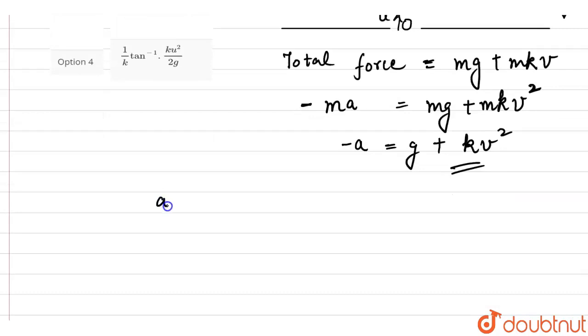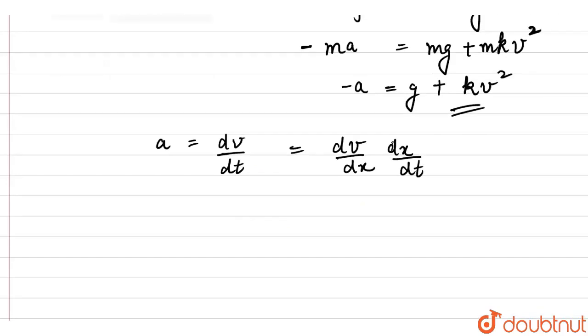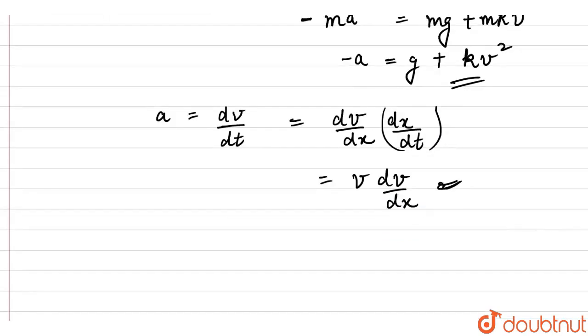We know that acceleration, we can write it as rate of change of velocity. It is dv divided by dt. Multiplying and dividing by dx, we get dv/dx into dx/dt. This is velocity v dv over dx. So we get an expression for acceleration.